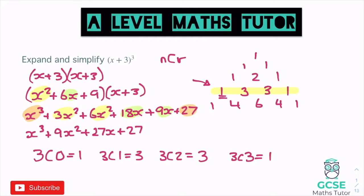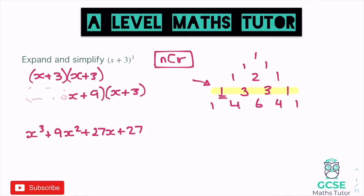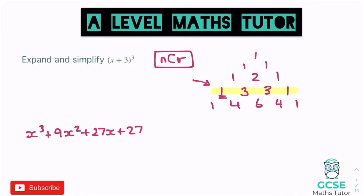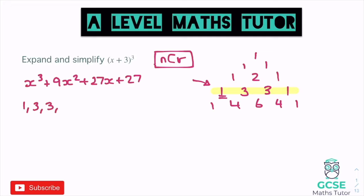We can find out what the pattern is going to be just using this button on our calculator. I'm going to be using that throughout the video — it's a very important little button, and you've got to press shift first to get there. So let's look at how we can use that on this question, making sure we can expand this triple bracket using binomial expansion before we start looking at higher powers. We know the answer we're trying to get to: x³ + 9x² + 27x + 27.